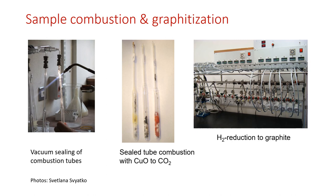The samples then need to be combusted and graphitized. They're put into quartz tubes on a vacuum line and sealed with a torch. The sealed tube also contains copper oxide, which when combusted in an oven converts the carbon in the sample to carbon dioxide. You can see in one tube there's copper left behind as well as some extra copper oxide. The tube on the left has a little bit of yellow material, which is probably sulfur from the original sample. So we will be transferring that CO2 out of these tubes onto a graphite rig, using hydrogen reduction to turn the carbon dioxide back into pure carbon.